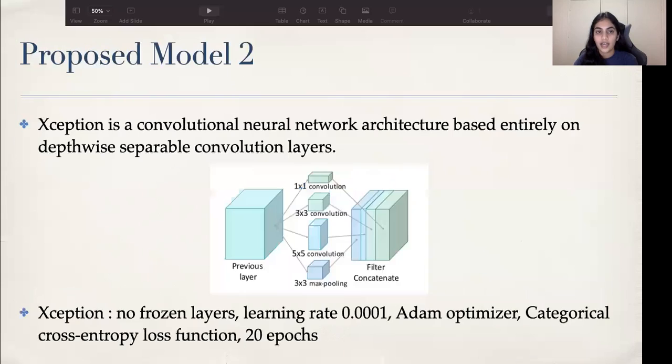To increase the accuracy further, we implemented Xception model on our dataset. Xception is a convolutional neural network architecture based entirely on depth-wise separable convolution layers. Xception architecture has 36 convolutional layers that are structured into 14 modules, all of which have linear residual connections around them except for the first and last modules.